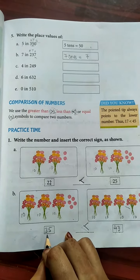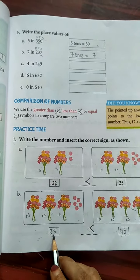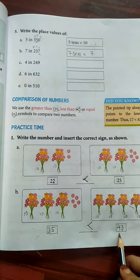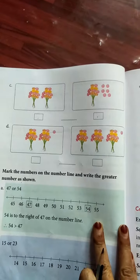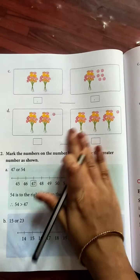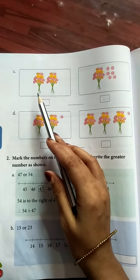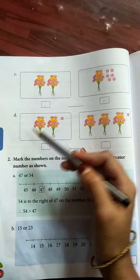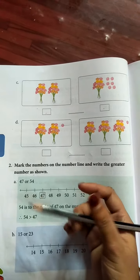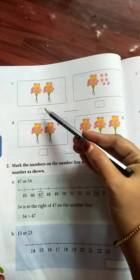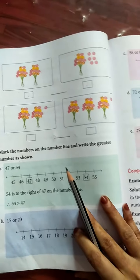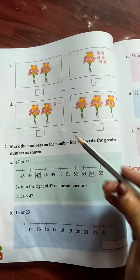So this pointed tip always points to the lower number. So here 35 is lower number. 35 is less than 43. Now see here, C and D, do it yourself. Same, first count the flowers and write here and write the symbol which is greater or less than.